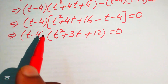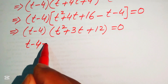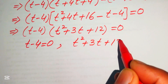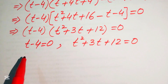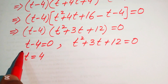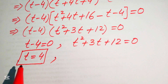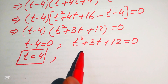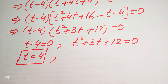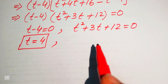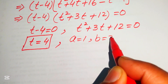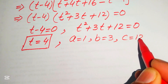We split into two cases. Case one: t minus 4 equals 0, which gives t equals 4. Case two: t squared plus 3t plus 12 equals 0. This is a quadratic equation in t, so we apply the quadratic formula. The coefficients are a equals 1, b equals 3, and c equals 12.